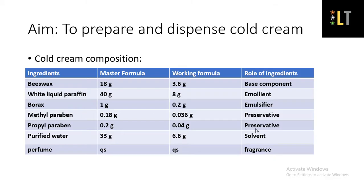Now we will see the composition of this cold cream. It usually contains beeswax, which is a base component, and white liquid paraffin, which has an emollient property. An emollient gives an oily texture to the formulation, and when applied to the skin it provides moisture and forms a layer on the skin to prevent the loss of moisture.